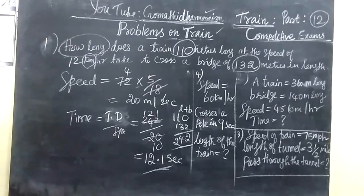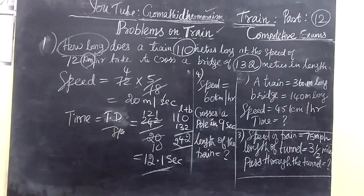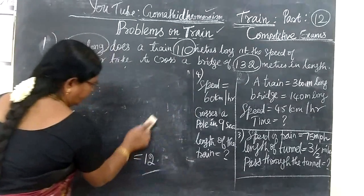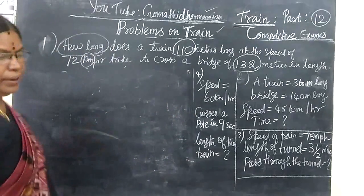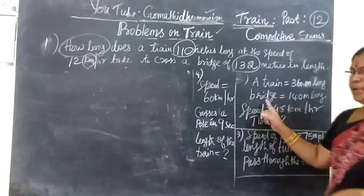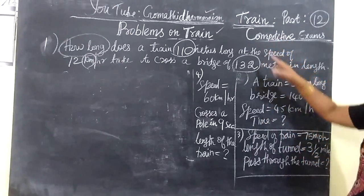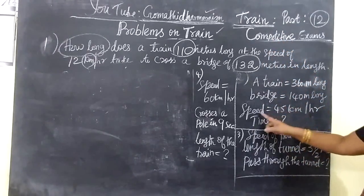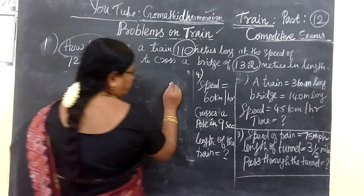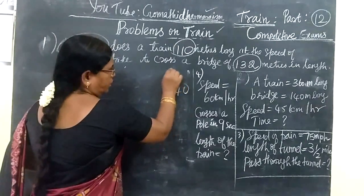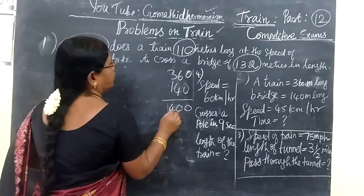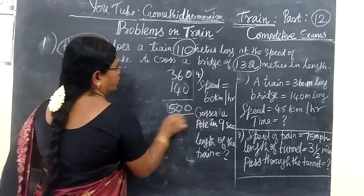Now we will do the next one. The second question: A train of length 360 meters long crosses a bridge of length 140 meters. The speed is 45 kilometers per hour. You want to find the time. Here also, you find the total distance: 360 plus 140 equals M plus B. So this is 500 meters.